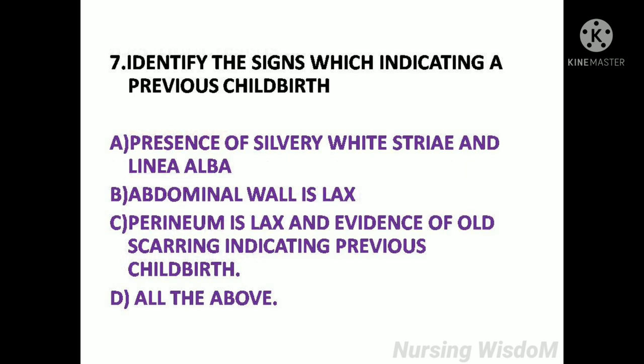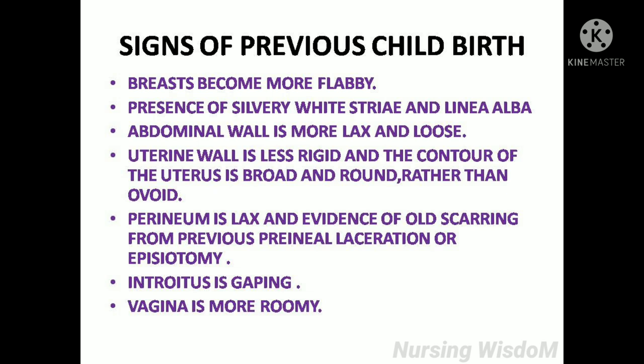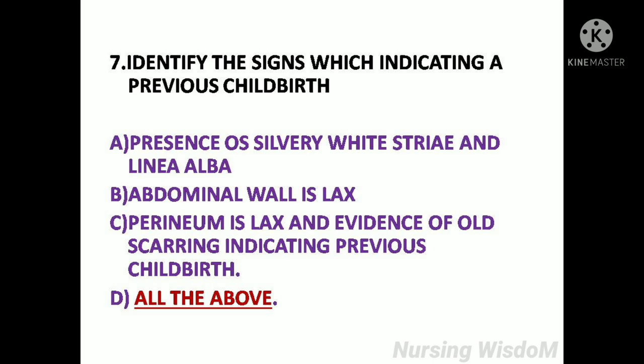Next question: Identify the signs indicating a previous childbirth. Option A: Presence of silvery white striae and linea alba. Option B: Abdominal wall is lax. Option C: Perineum is lax with evidence of old scarring. Option D: All the above. Signs of previous childbirth include: breasts become more flabby; presence of silvery white striae and linea alba; abdominal wall is more lax and loose; uterine wall is less rigid with a broad and round contour; perineum is lax with evidence of old scarring from previous perineal laceration or episiotomy. The answer is Option D: All the above.